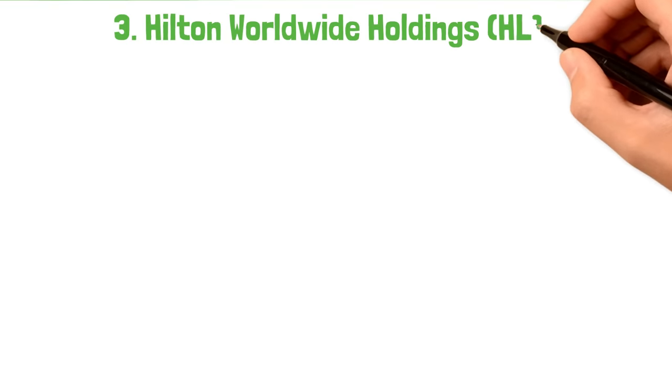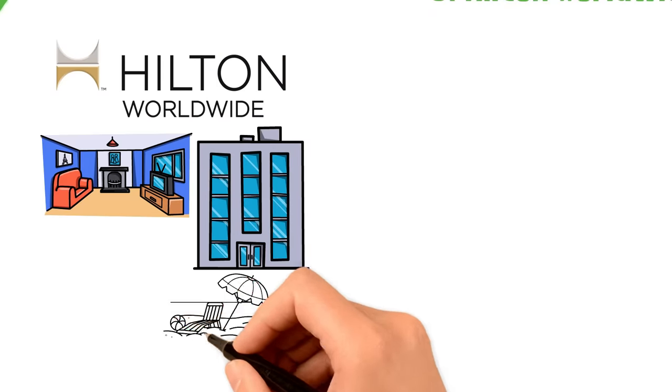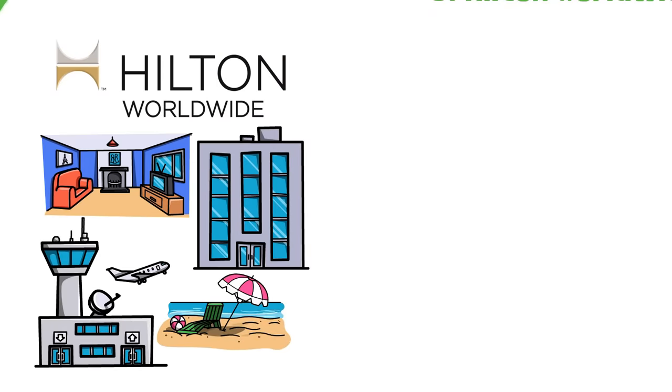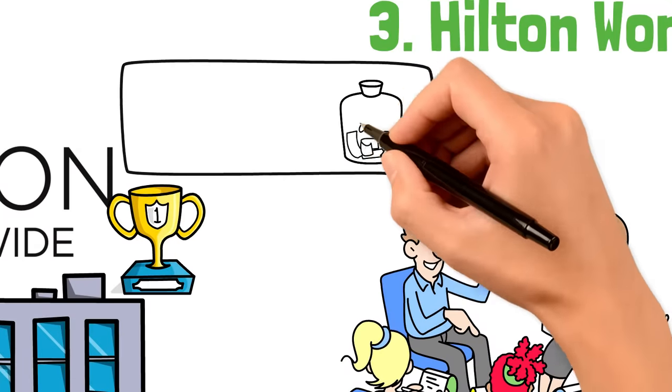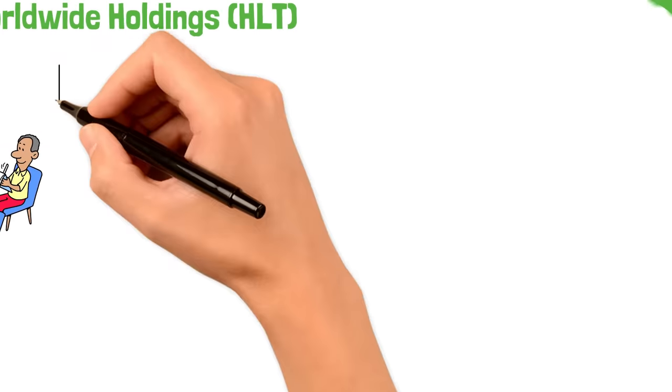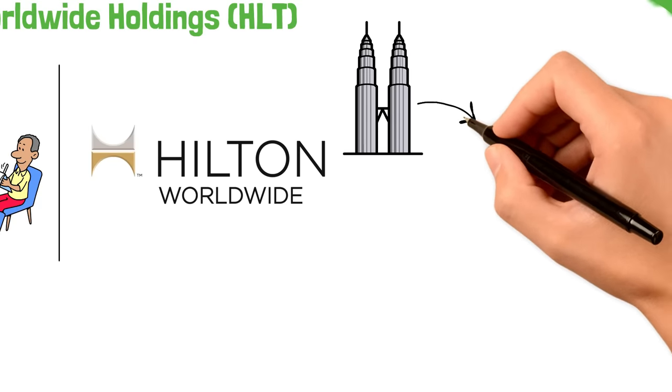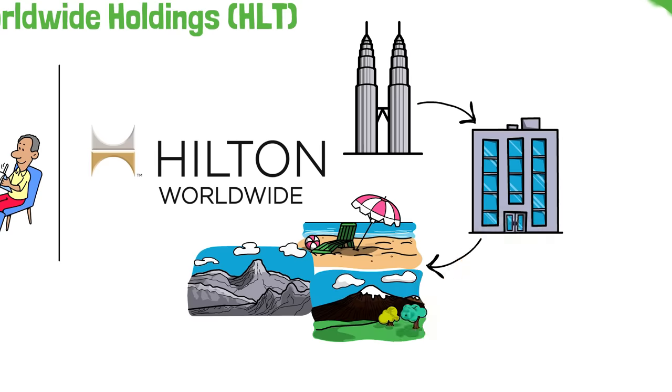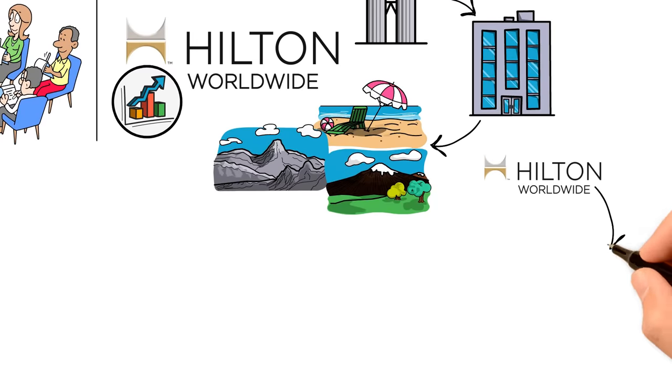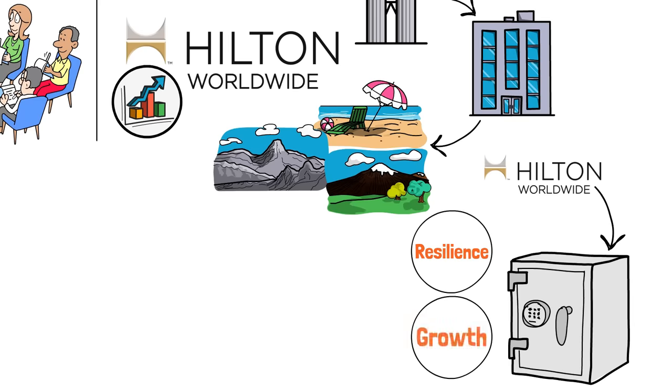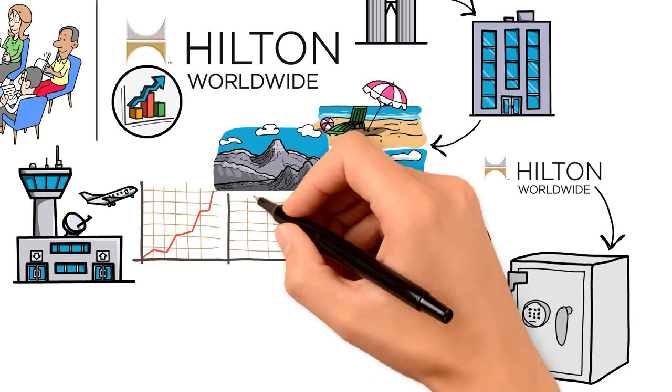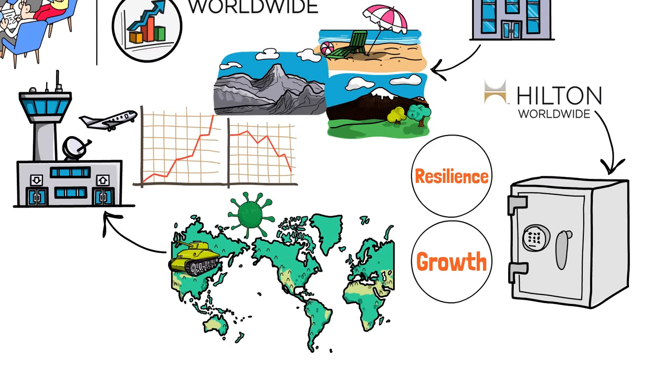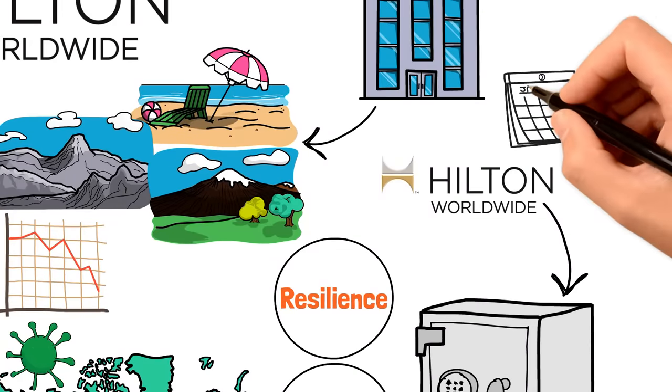Next up in Bill Ackman's portfolio of dividend darlings is Hilton Worldwide Holdings, ticker symbol HLT. When you think of Hilton, luxurious stays and global travel might come to mind. But let's peel back the layers and see why Hilton is not just a leader in hospitality, but also a standout choice for investors looking for solid dividend stocks. Hilton is more than just a hotel brand. It's a global powerhouse in the travel industry, with a portfolio that spans across several different market segments. From upscale hotels to extended stay suites, Hilton has something for every type of traveler. This diversity isn't just great for guests. It's a strategic advantage that helps Hilton navigate the ups and downs of the travel industry. But why does Ackman, and why should we, bet on Hilton? It's all about resilience and growth. The travel industry can be volatile and affected by economic cycles, global events, and changing consumer trends. However, Hilton has demonstrated time and time again its ability to adapt, innovate, and grow, regardless of the challenges.